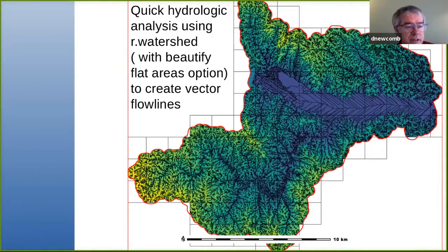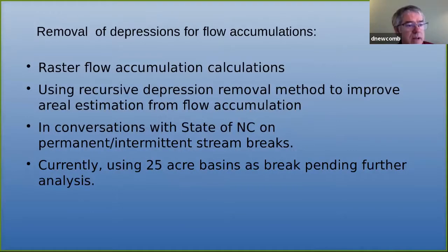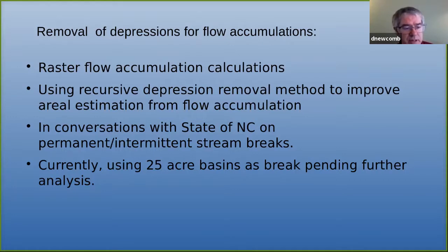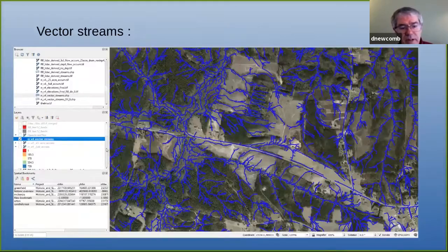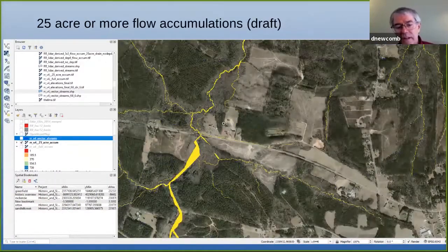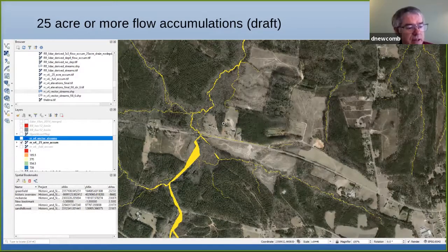I did a quick hydrologic analysis. There's a beautify option so it looks nice going down the middle of the reservoir. I removed the depressions for the flow accumulation, ran some flow accumulation steps, and used a 25-acre basin as a break for permanent water. I've got to get back with the folks at DEQ about what would be better for that area. These are the streamlines I got from that analysis, cutting it down to those that are 25 acres or more. I've got a few things to tweak on that.